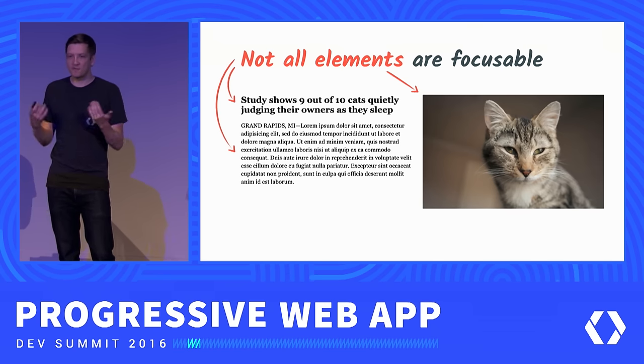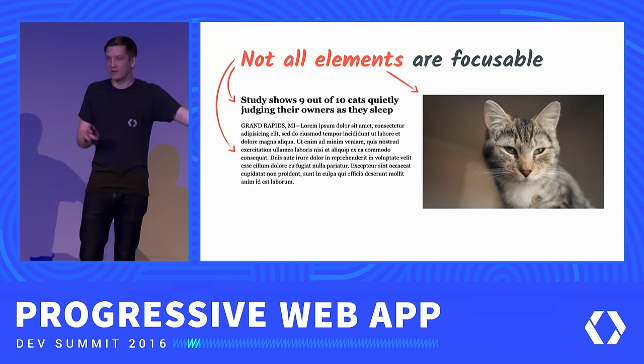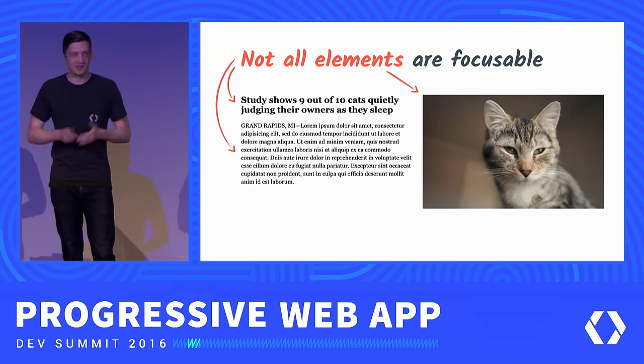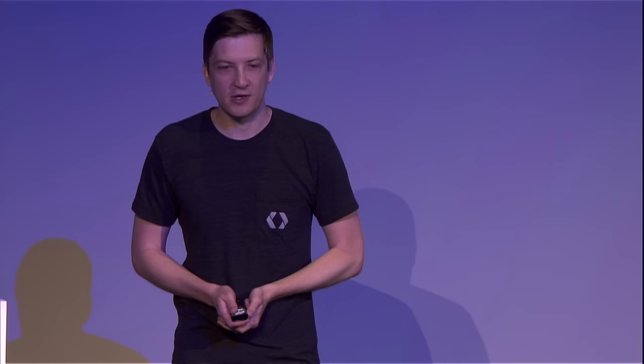If you're worried that someone with visual impairment might miss important non-focusable content, don't be — that's why we have screen readers. A screen reader's sole job is to read headings, text, and image content using alt tags. Don't make something focusable if the user can't interact with it — that might seem helpful, but it's detrimental to the user experience. If you build interactive controls out of non-focusable elements like a div, your users may not be able to interact with it at all.